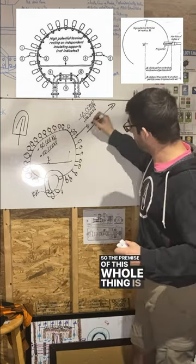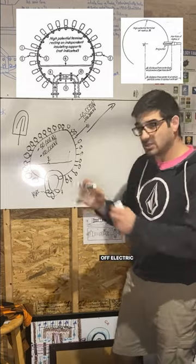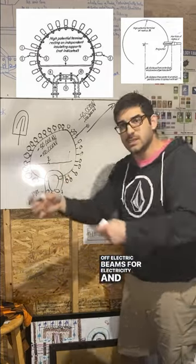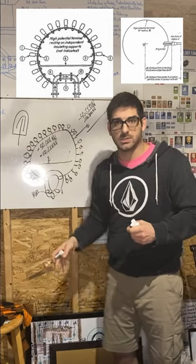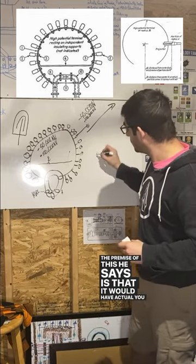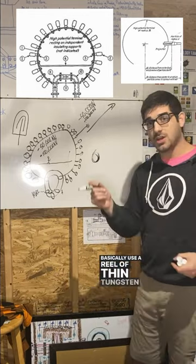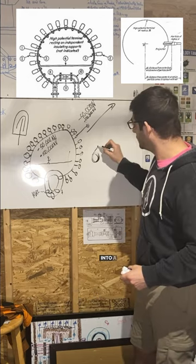So the premise of this whole thing is not that it would shoot off electric beams, or electricity, and electric arcs, or lightning bolts. The premise of this, he says, is that he would have actual, you basically use a reel of thin tungsten wire, and you feed that into a nibbler.